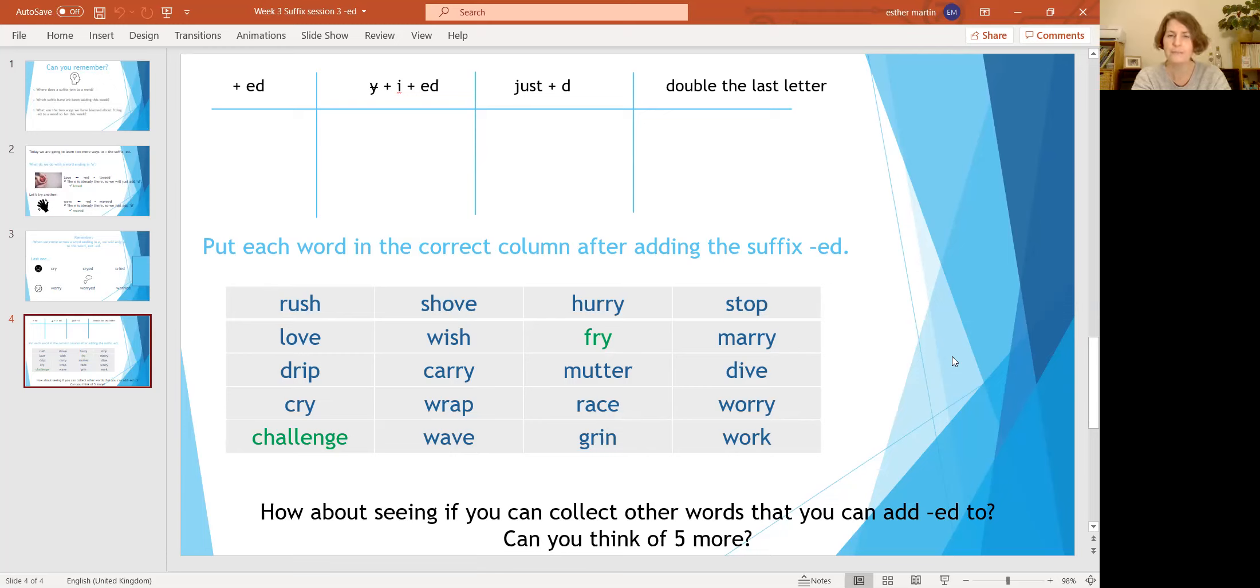And then the last one is where we need to look for those vowels again. If we look for the vowel and it's just before the last letter, we double the last letter. Now underneath, can you see a chart that's got lots of words in? They're all in blue apart from two. What I'd like you to do is I'd like you to choose a word from that chart, I'd like you to add -ed to it, and I would like you to put it in the right column. So you have to remember the rule to know what to do. I would like you to do it with all of the words if you can, but the two words that are in green are a little bit more of a challenge, so I'd like to have a go at that if you can.